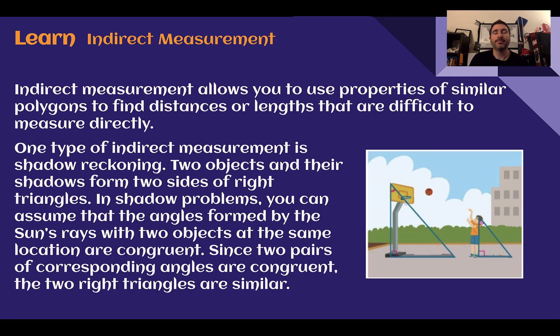Indirect measurement allows you to use the properties of similar polygons to find distances or lengths that are difficult to measure directly.